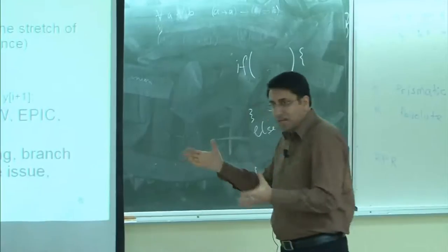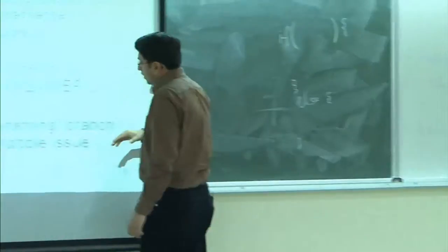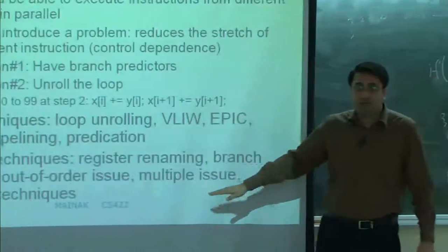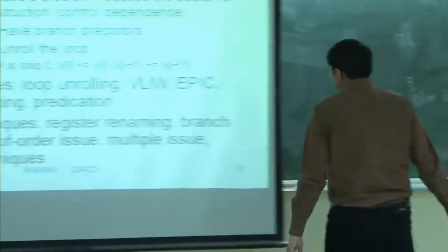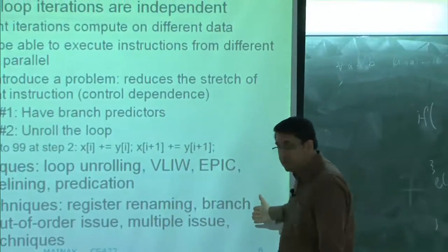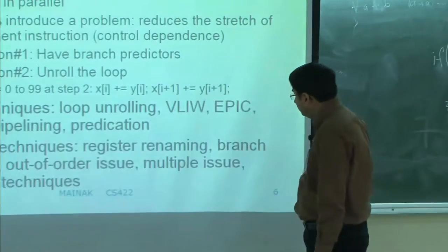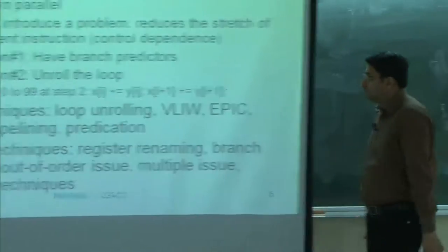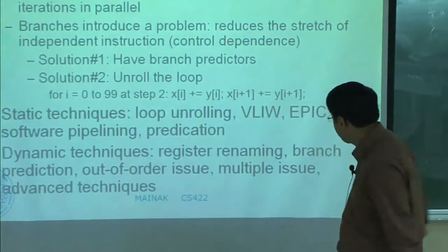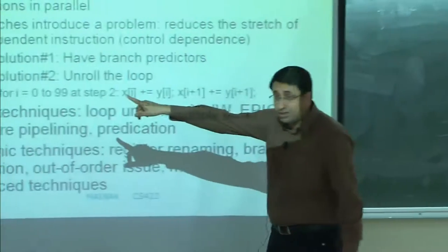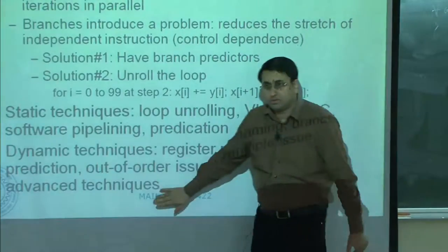What are the dynamic techniques? These are essentially hardware techniques. One important one is register renaming, where you try to remove name dependencies. Branch prediction we have talked about at length. Out-of-order issue — I have already shown some flavor of that: I am reordering instructions. Multiple issue is also shown there — issuing multiple instructions every cycle — and some more advanced techniques for exposing more ILP.